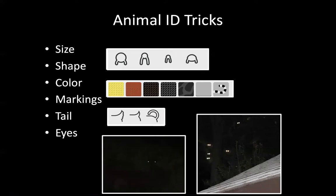Body shape is another indicator — raccoons tend to be fatter and rounder, possums tend to be leaner and longer. Specific markings like raccoon tails and masks, the black on the backs of their ears in red fox, how the tail is shaped and held, and eye glow. We don't always get really clear photos — you may get a tip of a tail, an eye glow, or something blurry. Being able to come up with one or two characteristics that make you reasonably confident in the species you're tagging is what you're looking for.